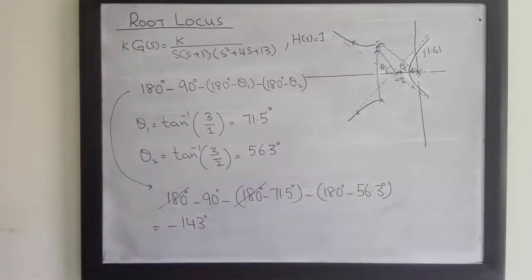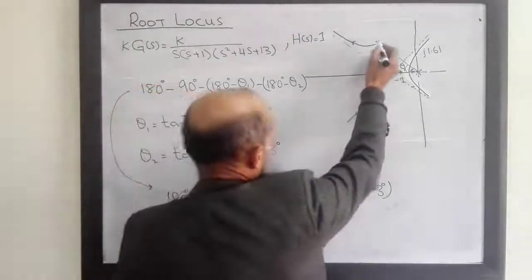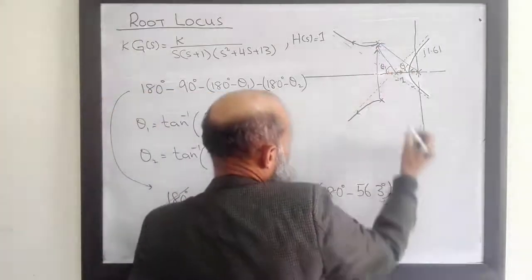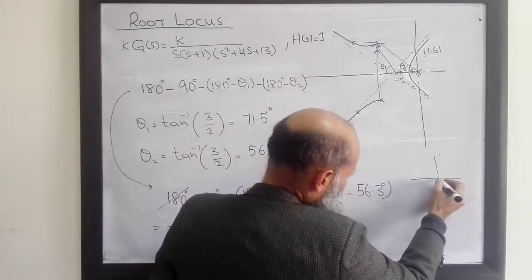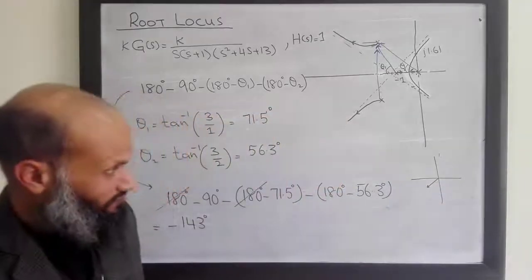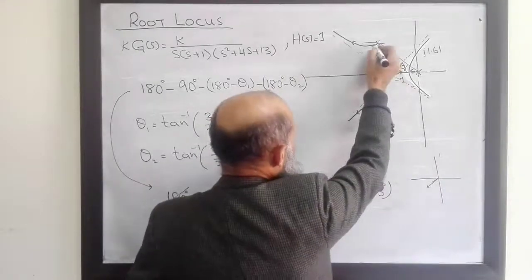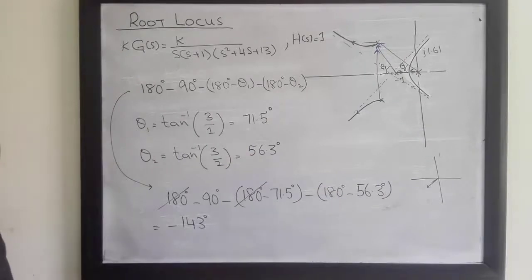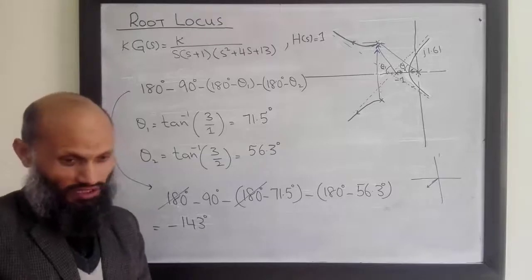The angle of departure is -143°. Since -135° corresponds to the asymptotic line direction, -143° is slightly steeper, which confirms that our earlier rough sketch was approximately correct. This completes the root locus for this system with all details. In the next lecture, we will learn how to utilize the root locus to design a controller for a given system.